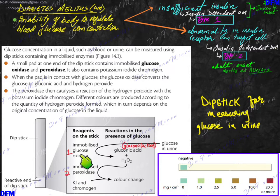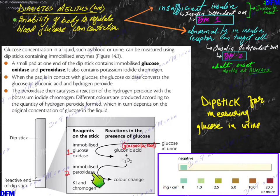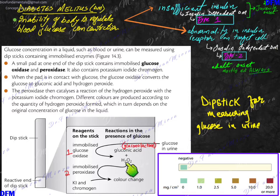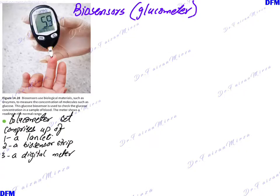The reactive end works because of two enzymes, potassium iodide, and chromogen. Glucose oxidase converts glucose in urine into gluconolactone and H₂O₂. The H₂O₂ is then further broken down by peroxidase into a compound that reacts with potassium iodide and chromogen to produce a color change. The amount of color change reflects how much H₂O₂ was produced, which in turn reflects how much glucose was in the urine sample.